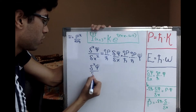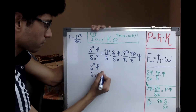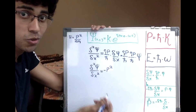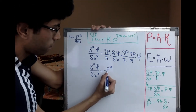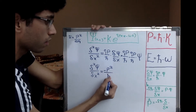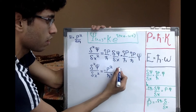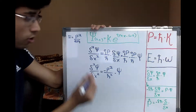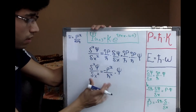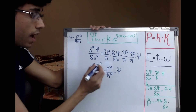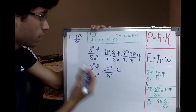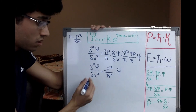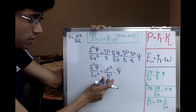So ∂²ψ/∂x² — i times i gives negative 1, so I get negative p-squared over h-bar squared times psi. I get a p-squared term, so I'm happy. Now I want to get rid of this negative sign, the 1/h-bar-squared term, and also bring in mass. So what if I multiply both sides by negative h-bar-squared over 2m?